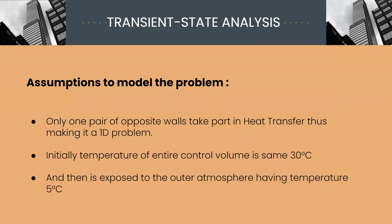Now, before looking at the calculations of the transient state problems, here are a few of the assumptions that we took to model the problem. Assumptions being that only one pair of opposite wall takes part in heat transfer, thus making it one dimensional problem. And also we have assumed that initially entire control volume, that is the room and the walls, are at same initial temperature 30 degrees Celsius, and later exposed to the surrounding having temperature 5 degrees Celsius. This helps us to model the problem as a model with transient conduction with convection.